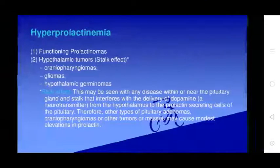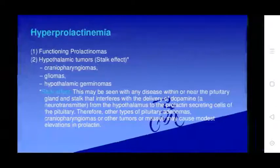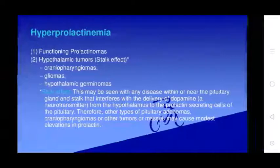Hyperprolactinemia may result from functioning prolactinomas, hypothalamic tumors, stalk effects, craniopharyngiomas, germinomas, and hypothalamic germinomas. This may be seen in any disease affecting nearby glands. Dopamine is a neurotransmitter from the hypothalamus that inhibits prolactin secretion from pituitary cells. Therefore, any type of pituitary adenoma or other tumor or mass may modestly raise prolactin levels.